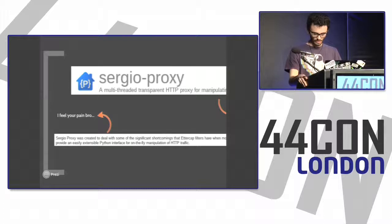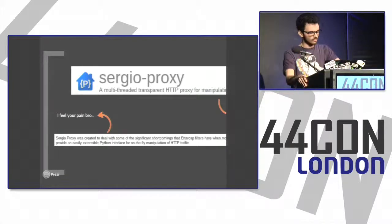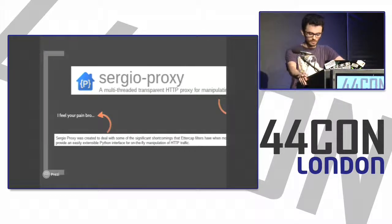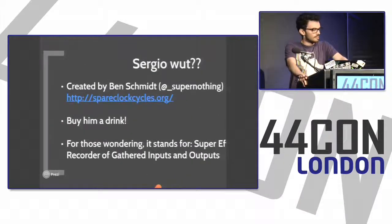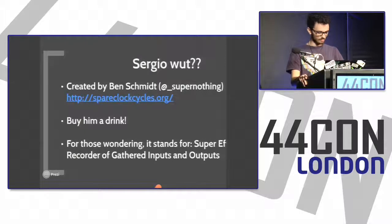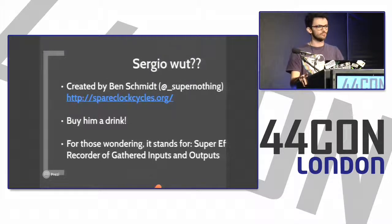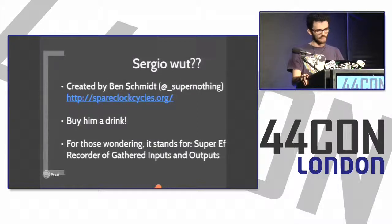The first thing I thought was, who the hell is Sergio and why is he naming a proxy after himself? But what really made me fall in love with the tool was its description: it was created to deal with some of the significant shortcomings that Ettercap filters have when modifying HTTP traffic — exactly what I was looking for. So Sergio Proxy was created by Ben Schmidt. It's basically a modified version of Moxie Marlinspike's SSL Strip proxy tool, modified so it hooks functions in the proxy and pushes traffic down to plugins that the framework implements, and those plugins can modify HTTP traffic in various ways.